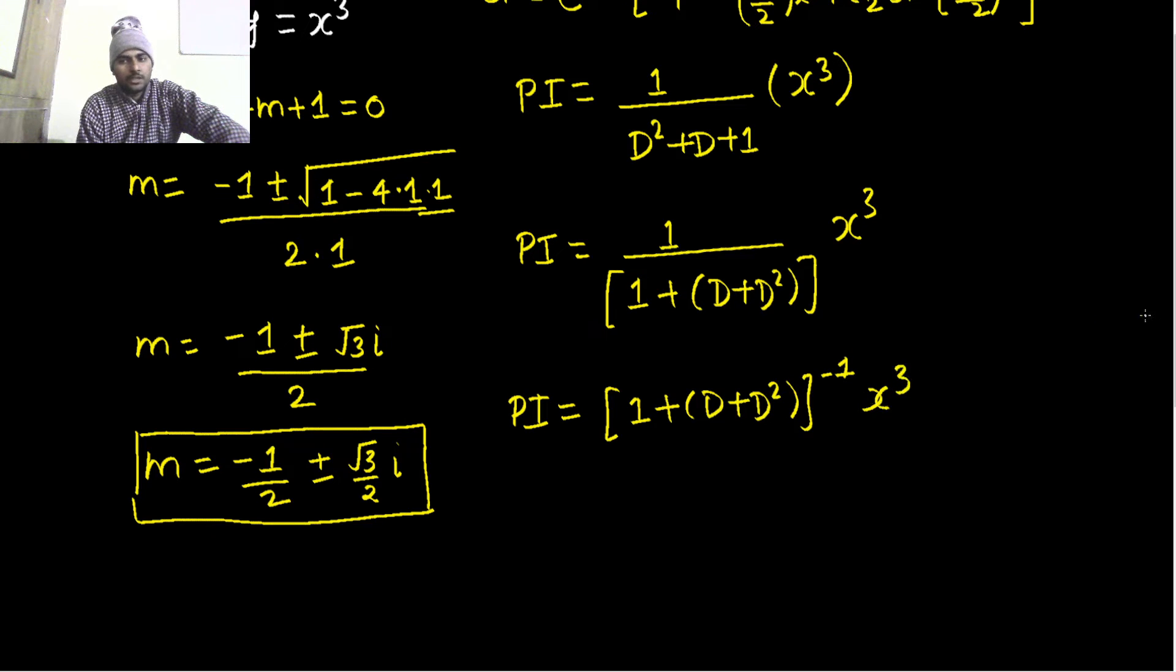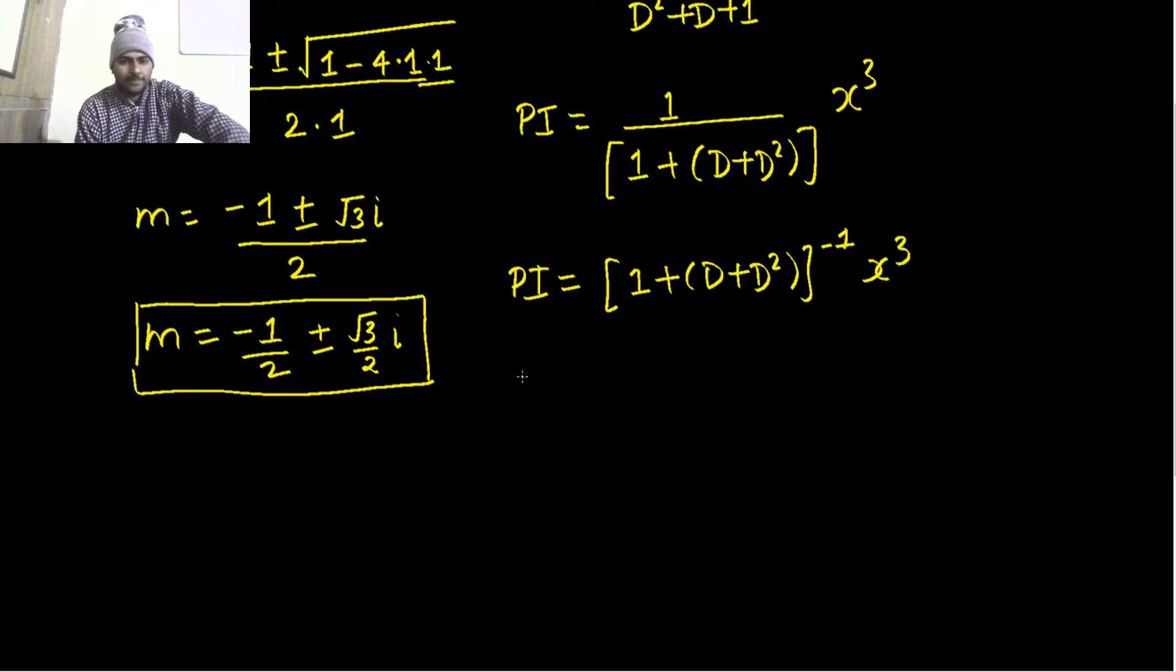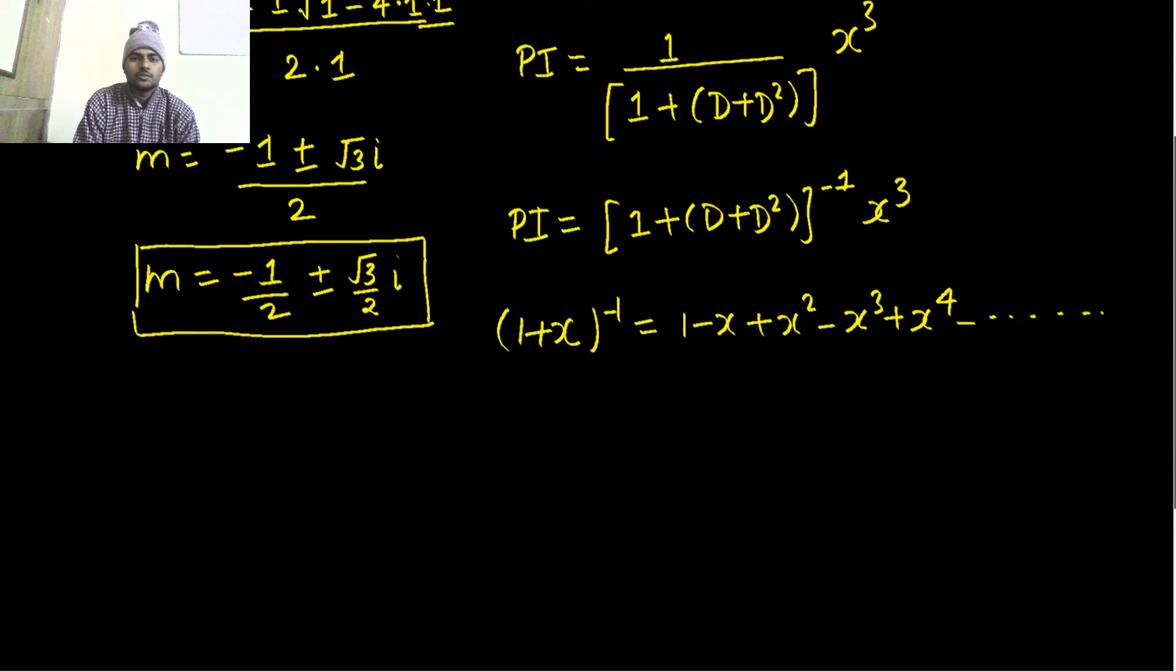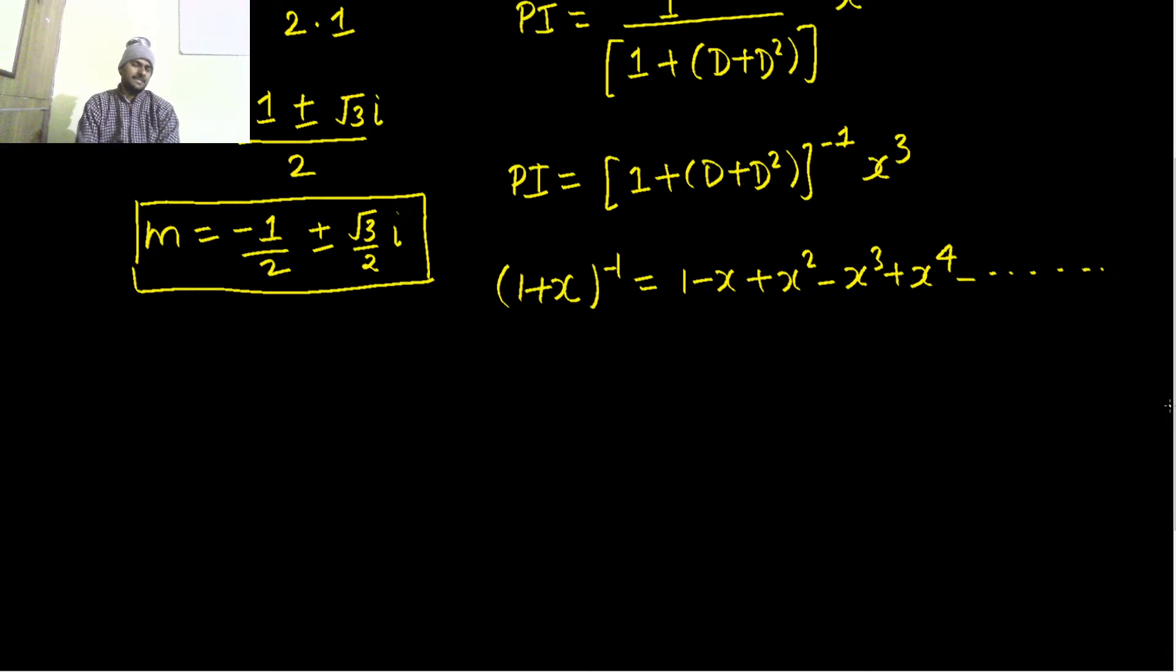This can be written as 1 upon [1 + (D + D²)]^(-1) operating on x³. You know the expansion of (1 + x)^(-1), that is 1 - x + x² - x³ + x⁴ and so on. In place of x you have D + D².